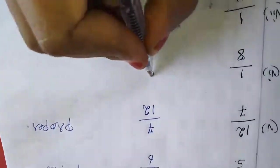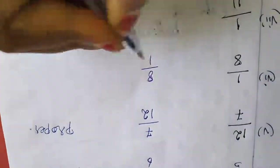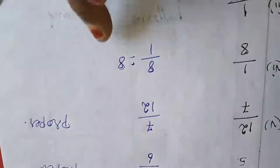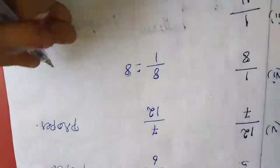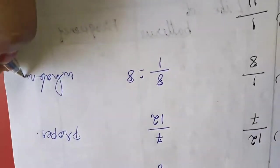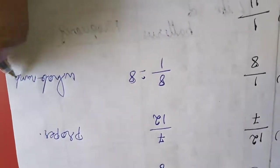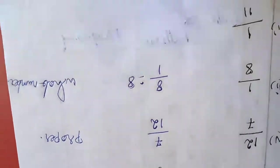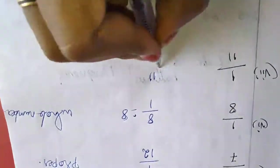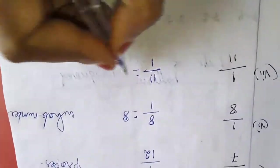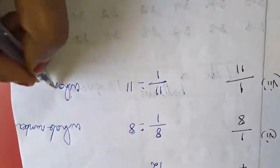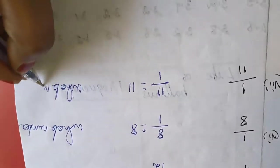Here 8/1 — 8/1 we can write as 8, which is a whole number. Again this one is also 11/1, which is 11 — also a whole number.